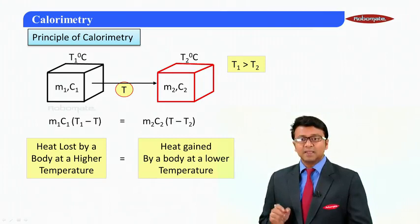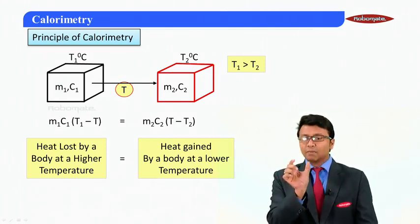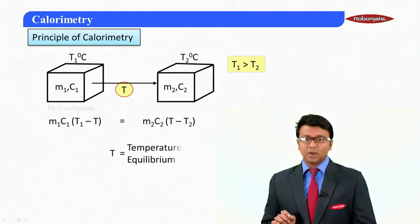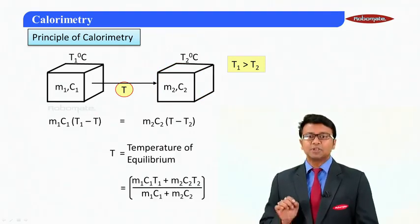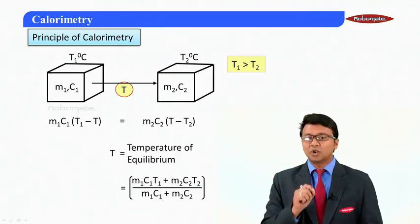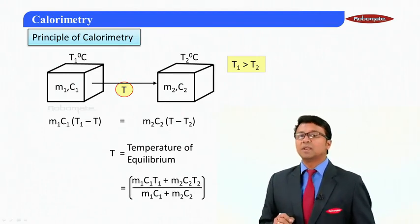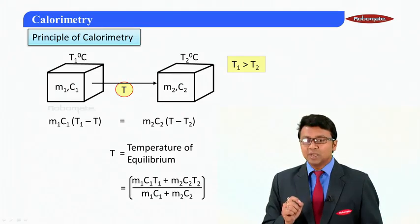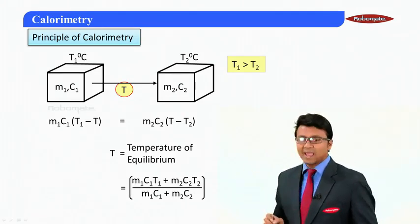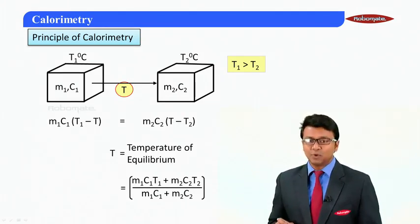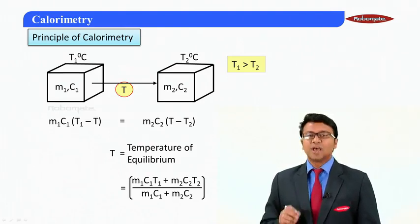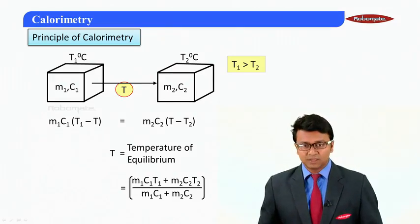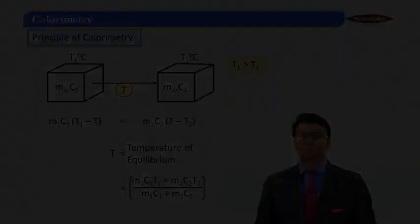Equating heat lost and heat gained — this is the most important principle in this module. Solving for T, the equilibrium temperature is: T = (m₁c₁T₁ + m₂c₂T₂) / (m₁c₁ + m₂c₂). We will be using this same concept in the numericals ahead. Thank you very much.